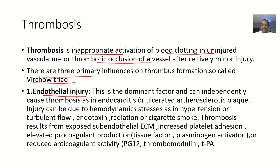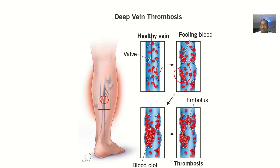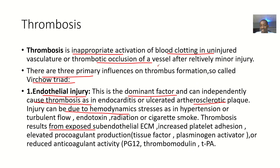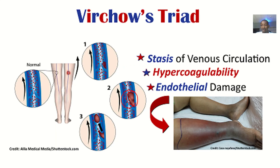One of them is endothelial injury. This is a dominant factor and can independently cause thrombosis, as in endocarditis or ulcerated atherosclerotic plaque. Injury can be due to hemodynamic stresses as in hypertension or turbulent flow, endotoxin, radiation, or cigarette smoke. The thrombosis results from exposed sub-endothelial extracellular matrix. If it is exposed, there will be increased platelet adhesion, elevated pro-coagulant production (tissue factor and plasminogen factor), or reduced anticoagulant activity. So if there's endothelial injury, the things promoting coagulation increase and those reducing coagulation decrease, so coagulation will obviously occur.